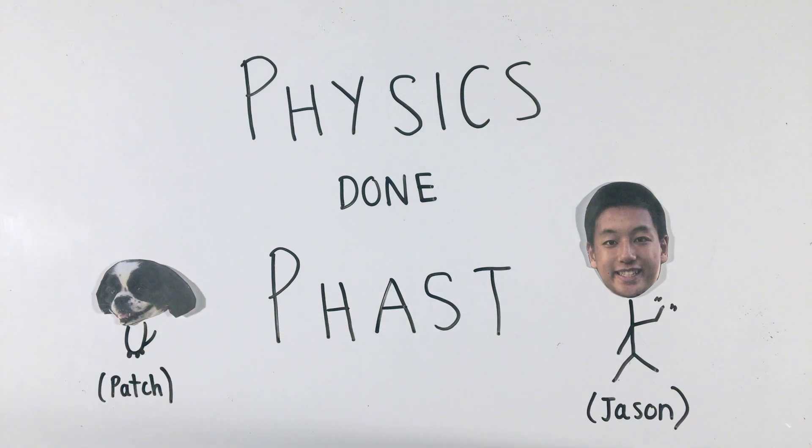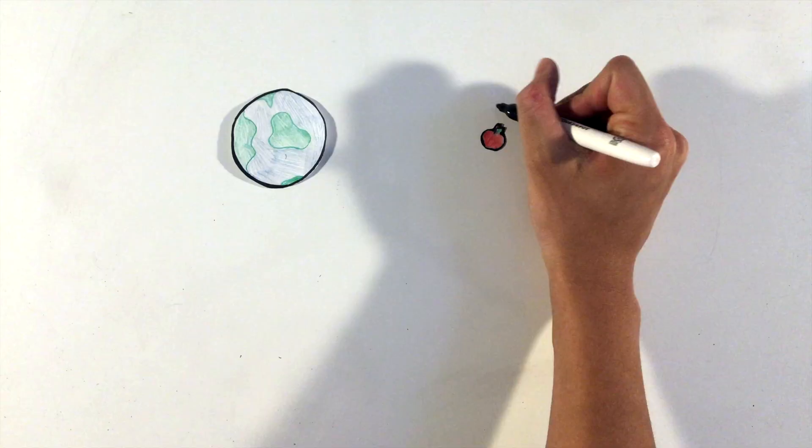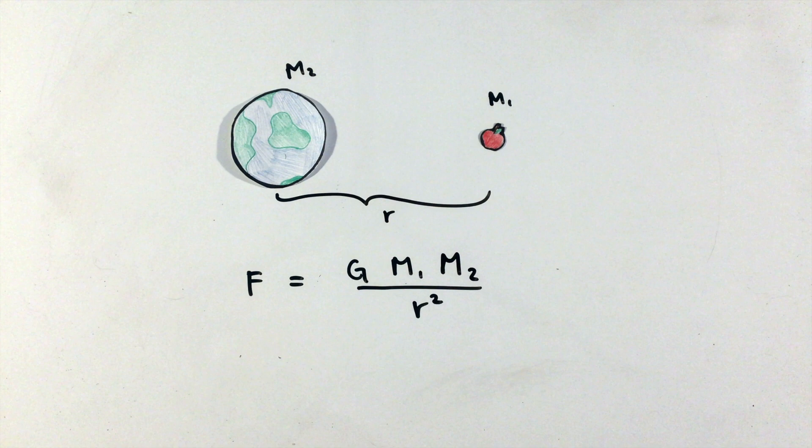As a quick review from my Newton's Universal Law of Gravitation video, the force of gravity between two objects in space is given by this equation here, with a direction that is always attracted to the other mass.